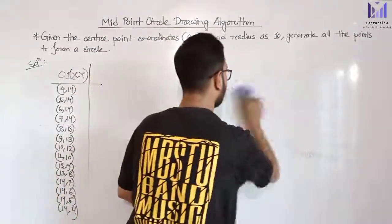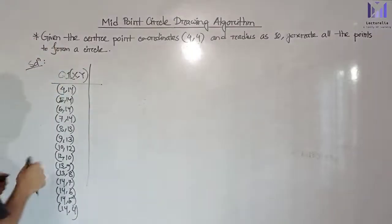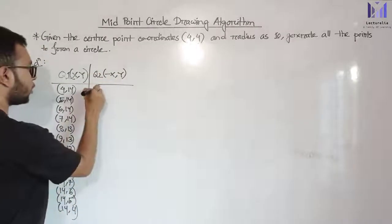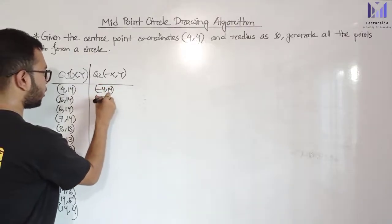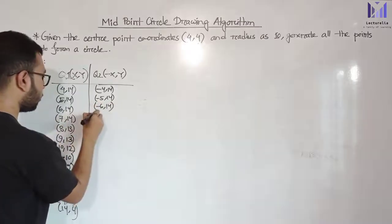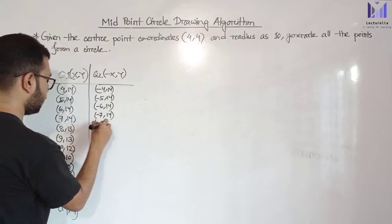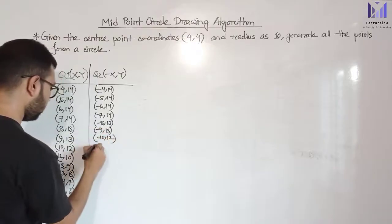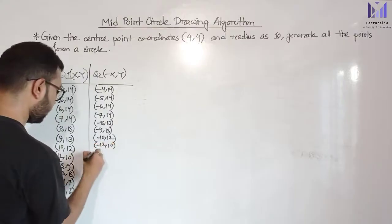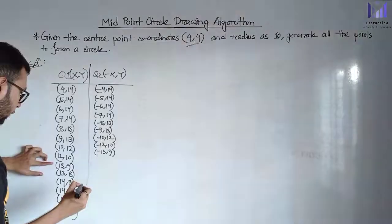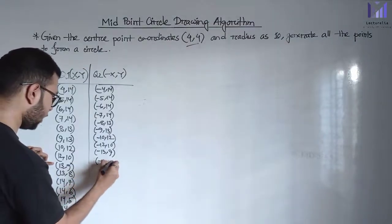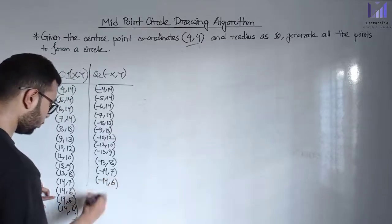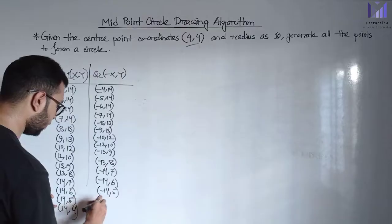Q2 coordinates (x negative, y positive): minus 4 14, minus 5 14, minus 6 14, minus 7 14, minus 8 13, minus 9 13, minus 10 12, minus 12 10, minus 13 9, minus 13 8, minus 14 7, minus 14 6, minus 14 5, minus 14 4.